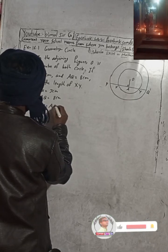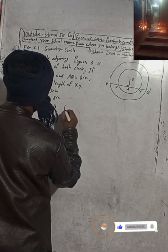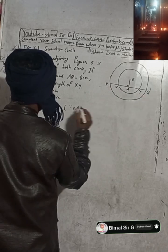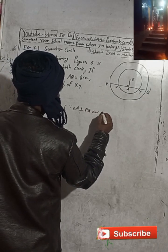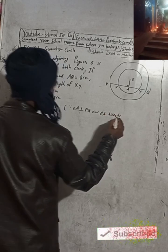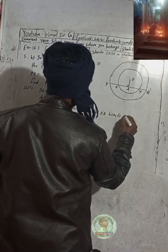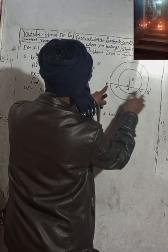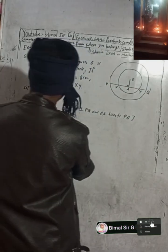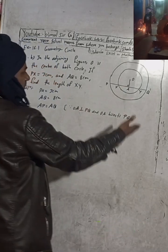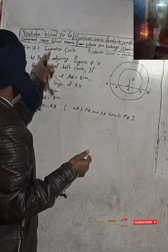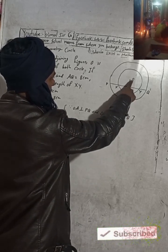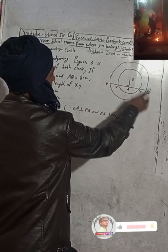AP is equal to AQ. Why? Because OA is perpendicular to PQ, and OA bisects PQ. This theorem — the perpendicular from the center of a circle to the chord bisects the chord — I have taught in a previous video in the same chapter. Check my playlist.